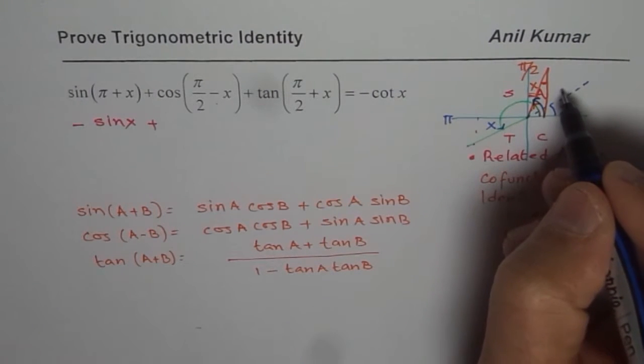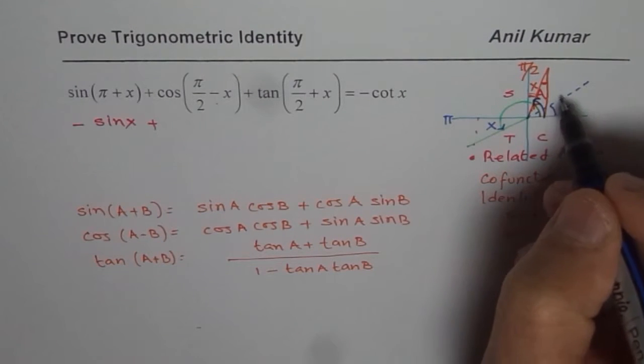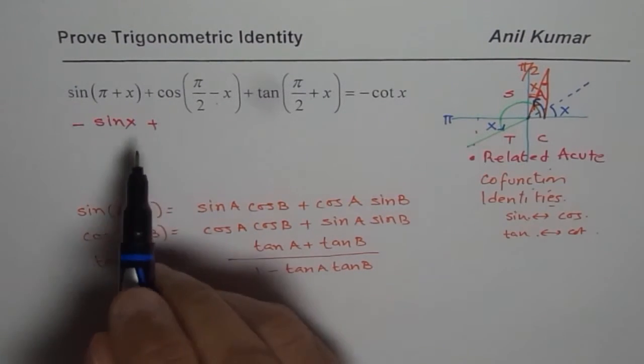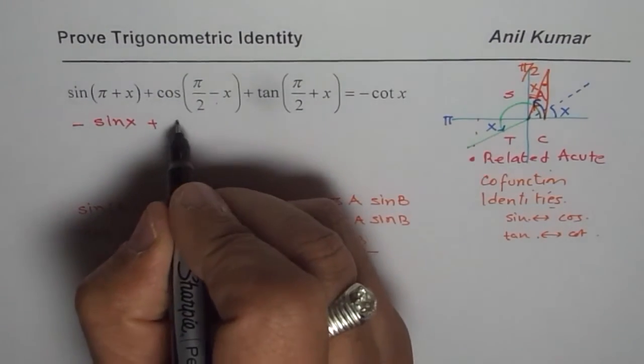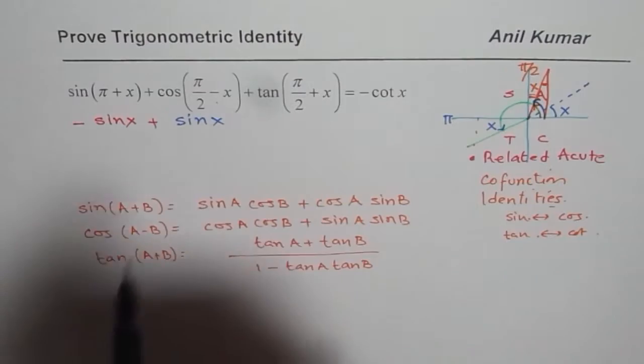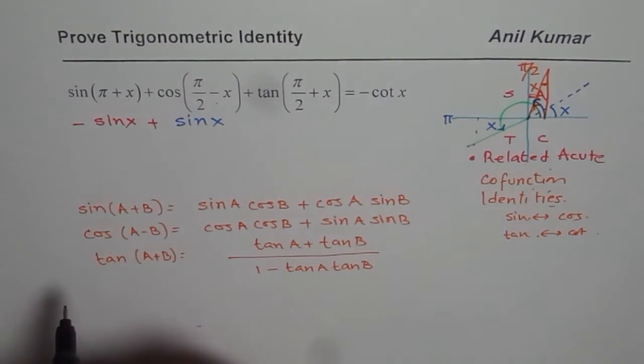And so, sin changes to cos, cos changes to sin. So, the co-function identity for cos pi by 2 minus x is sin x. Since both are positive, this remains positive. Do you get the idea?